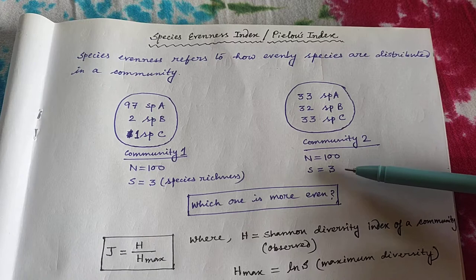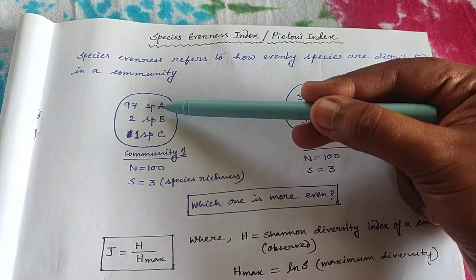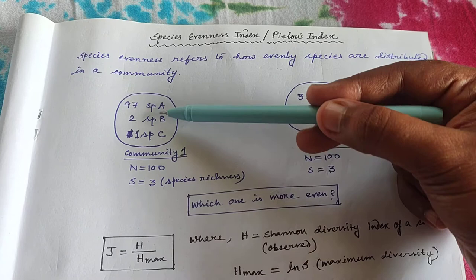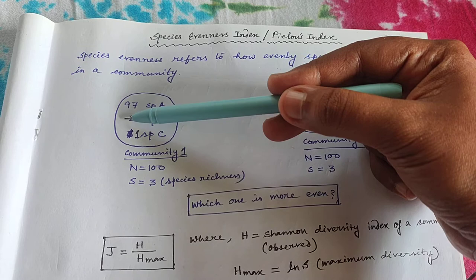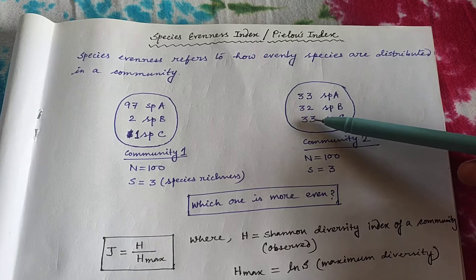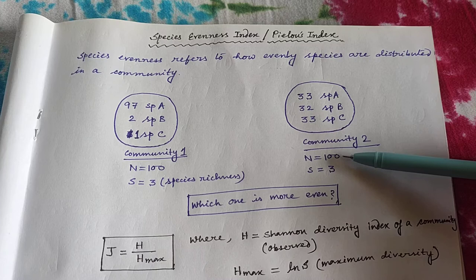What is species richness? Species richness is nothing but the total number of species present in a given community. So here both community 1 and 2 have 3 species: A, B, C. Their total number, capital N, is also the same — 97 plus 2 plus 1 equals 100, and 33 plus 32 plus 33 equals 100. So the total number of individuals across all species is the same in both communities.